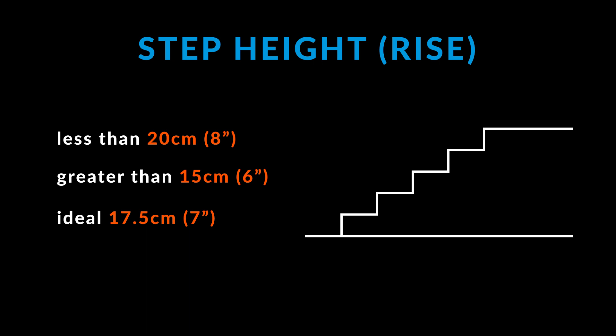Before starting any calculations we should first understand some of the basic principles and rules that we should have in mind while building a comfortable and safe to use staircase. The first thing to know is that the height of each step, which is commonly named the rise, should be greater than 15 centimeters and less than 20 centimeters. Ideally, the rise should be close to 17.5 centimeters or 7 inches. I will try to use both metric and imperial units whenever I can.